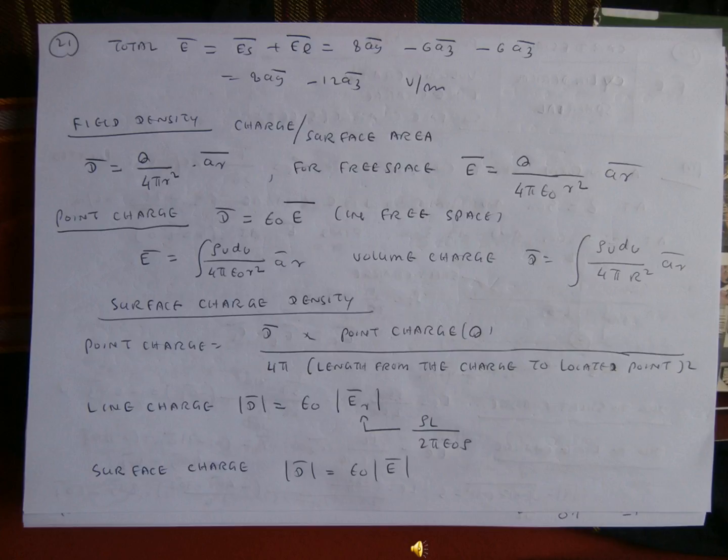The next one is the field density. The field density is the charge per surface area and can be calculated. The field density is equal to Q divided by 4πR squared multiplied by ar beta. The form of 3 sub A, E-Veta is equal to Q divided by 4πε₀R squared multiplied by ar beta.